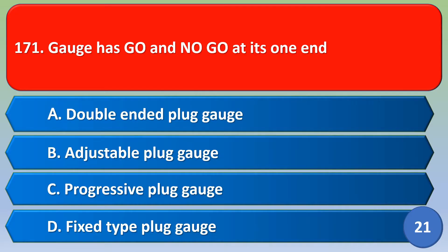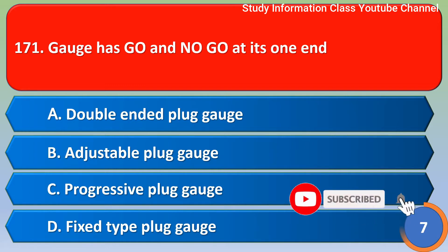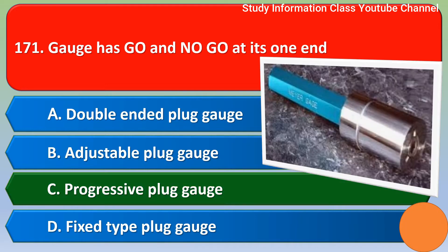Namaste Shri Rama. Gauges: go and no-go — at its one hand option, double-ended plug gauge, adjustable plug gauge, progressive plug gauge, fixed type plug gauge. For this question, the correct answer is option C: progressive plug gauge.